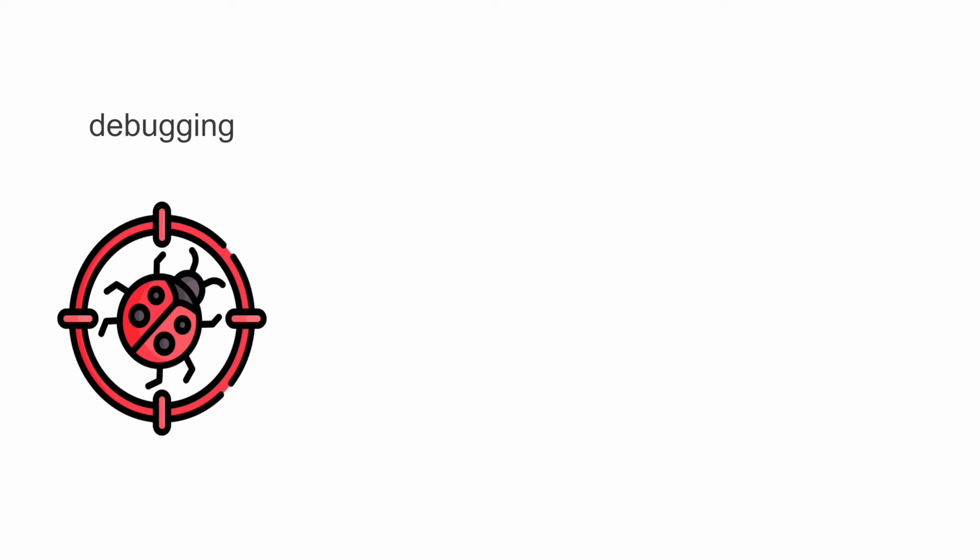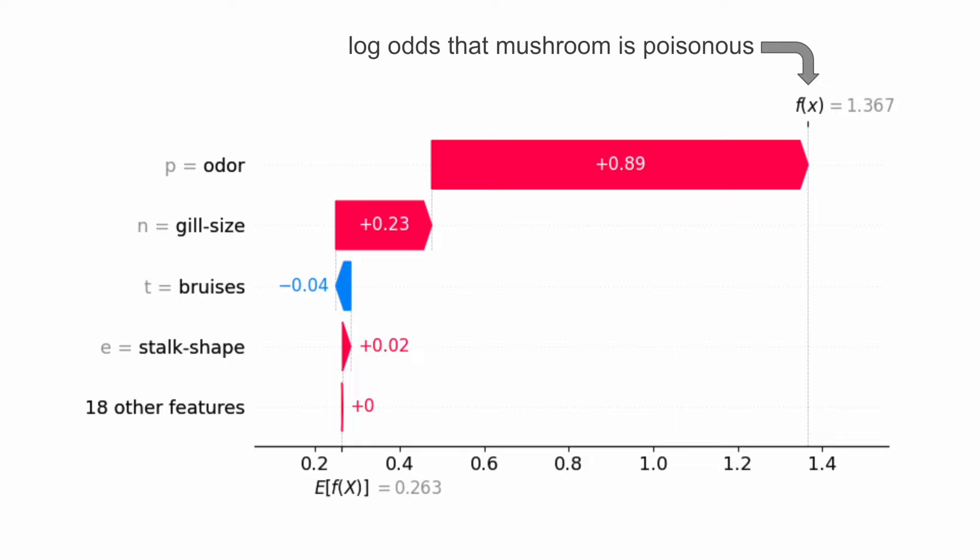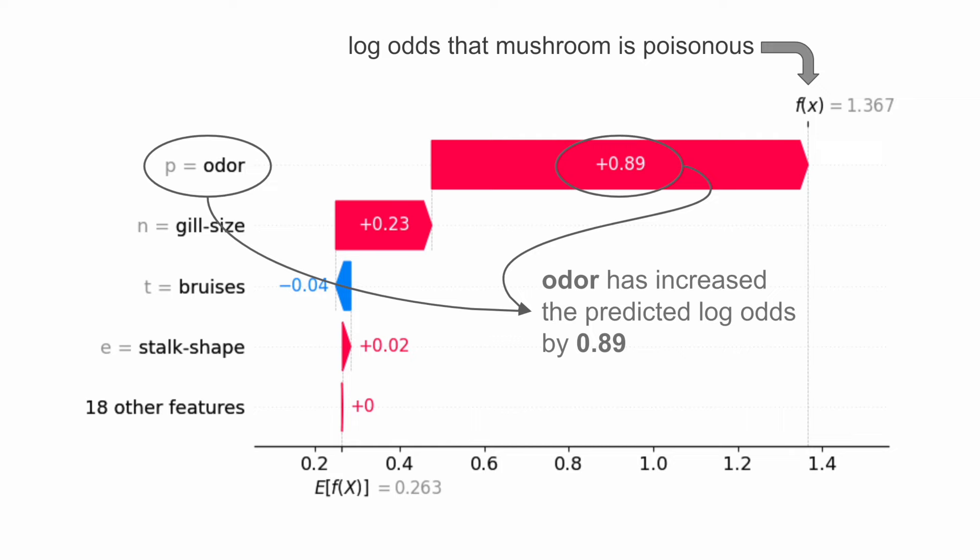The second benefit is that SHAP can provide the basis for human-friendly explanations. You may be cautious about a prediction that a mushroom is edible — and rightly so, as that prediction can have serious consequences. SHAP can be used to provide an explanation and increase trust in the model's prediction.